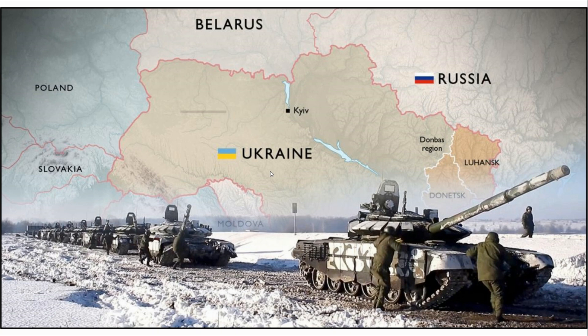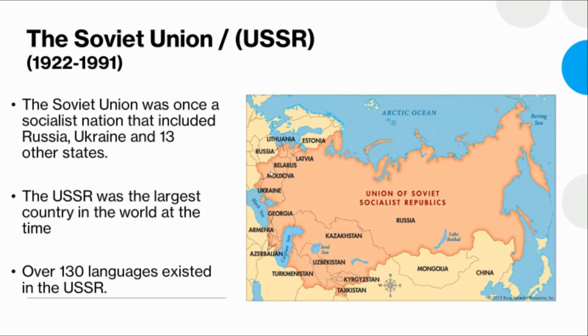The nickname of Ukraine is 'breadbasket of Europe,' which is really important because more than 80 percent of the wheat for the whole world comes from Russia or Ukraine. When the war started in 2022, the whole world experienced rising bread and egg prices. The war still continues, but I want to analyze more about the conflict and what is going on behind it.